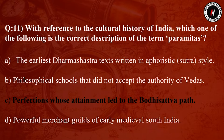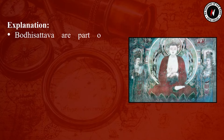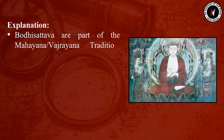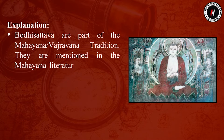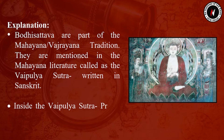The answer is Option C. The correct description of the term Paramitas is perfections whose attainment led to the Bodhisattva path. Bodhisattvas are part of the Mahayana and Vajrayana tradition. They are mentioned in the Mahayana literature called the Vaipulya Sutra, written in Sanskrit.